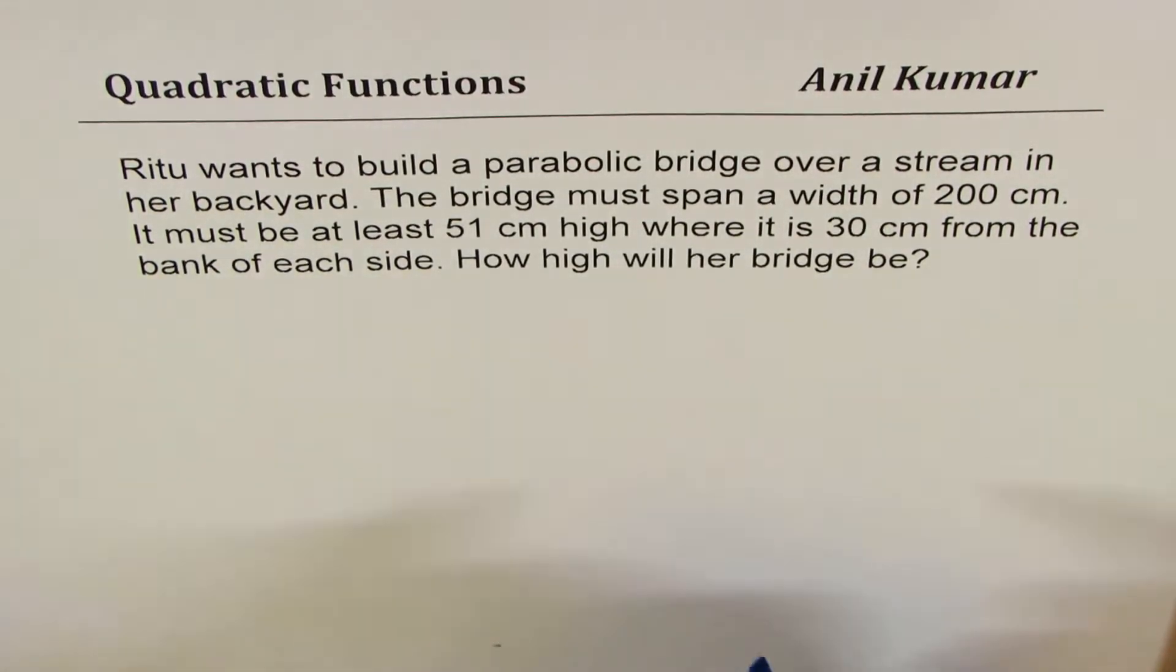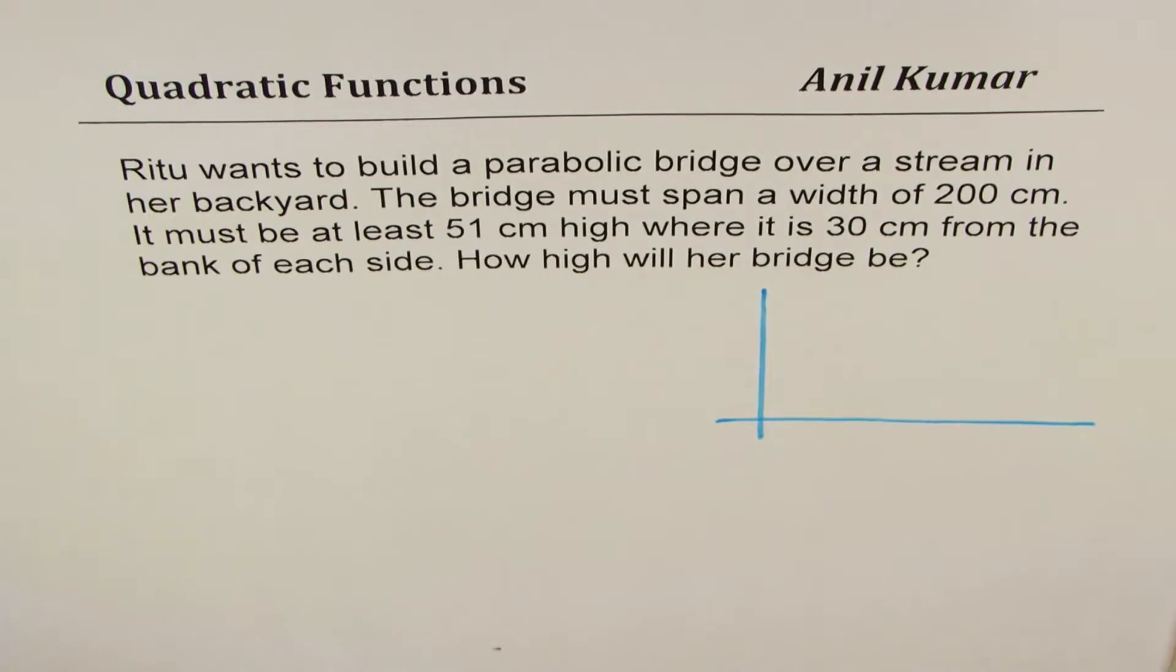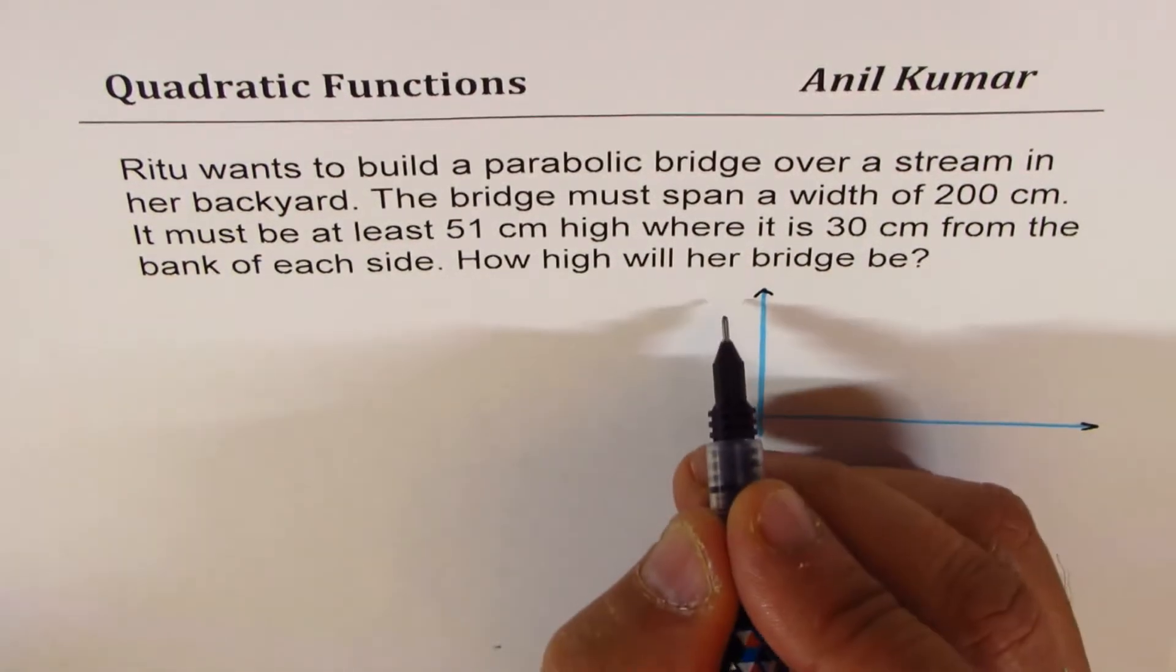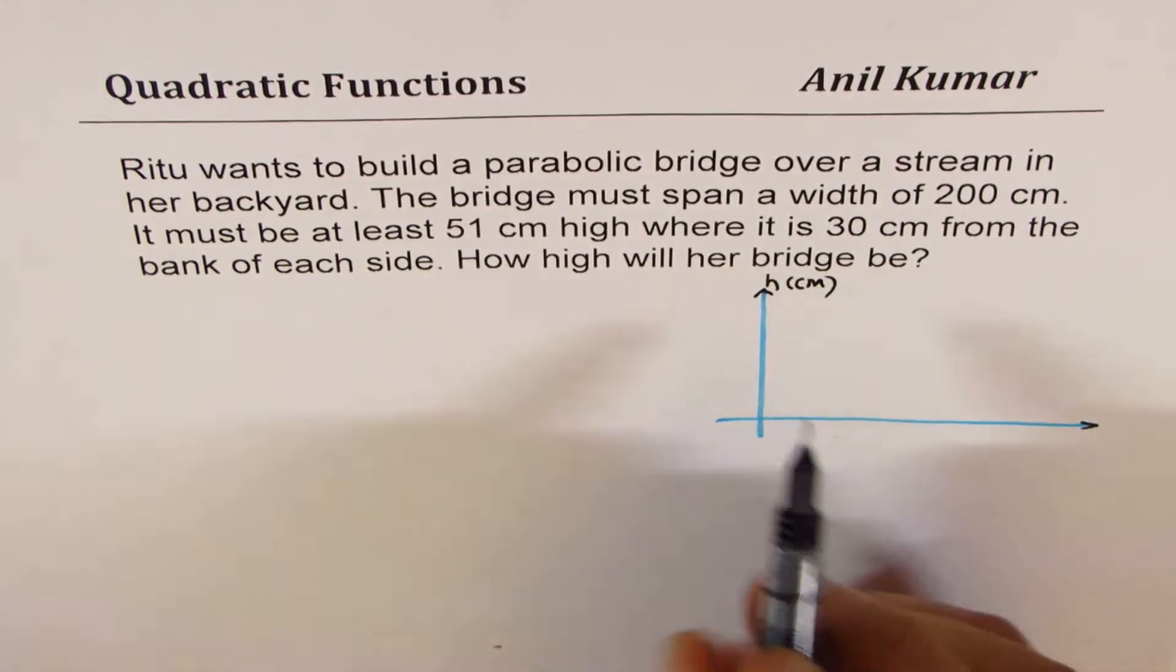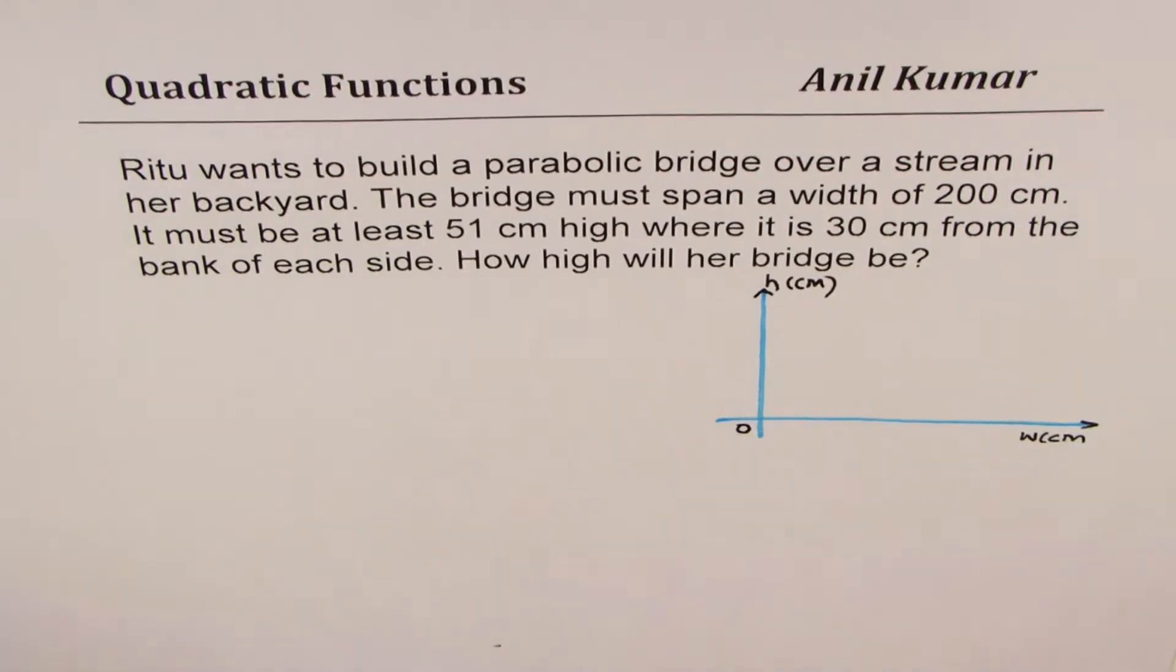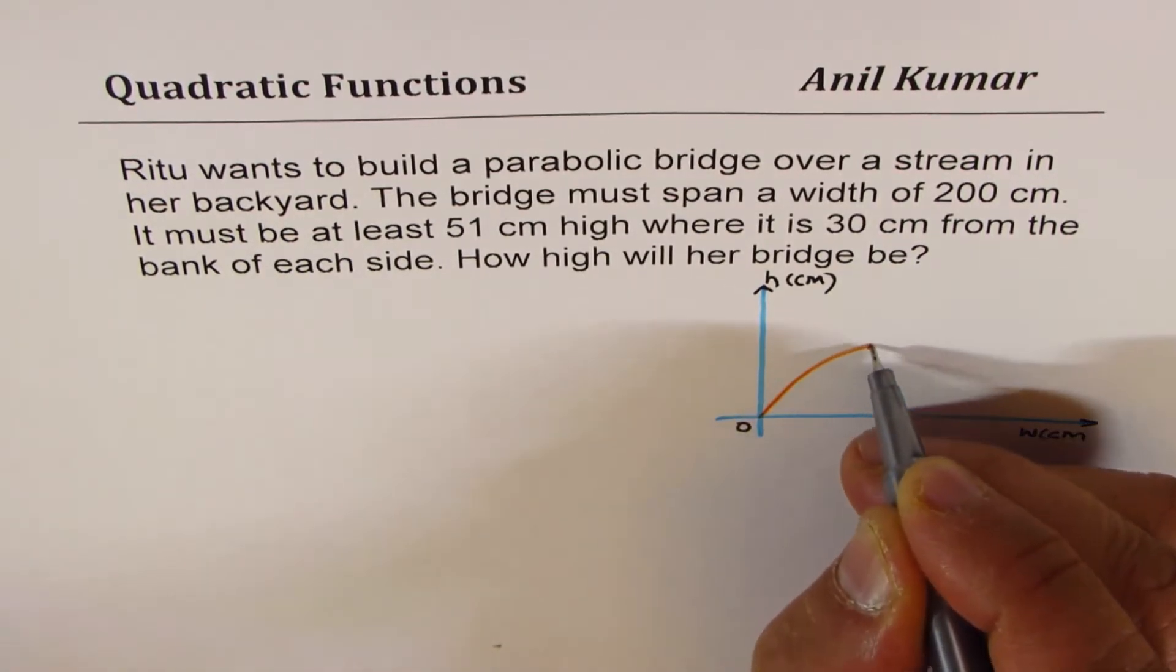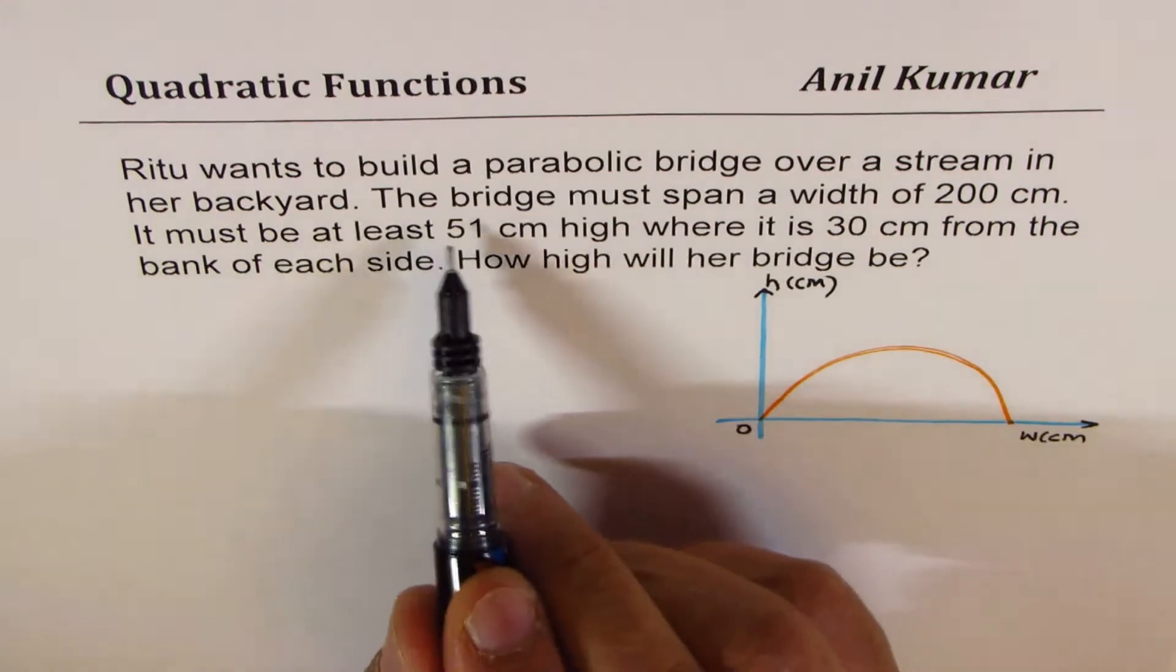Let us first sketch the scenario. So along the x-axis we will take the width, and height along the y-axis. Units are in centimeters, so height in terms of centimeters here and width in terms of centimeters along the x-axis. Now when you're talking about a bridge, it is a parabolic path, so let's make one. Let's say this is the bridge.